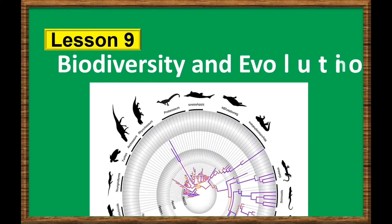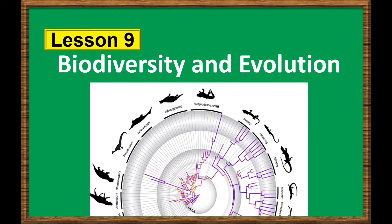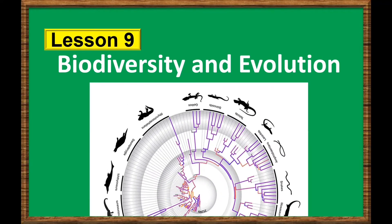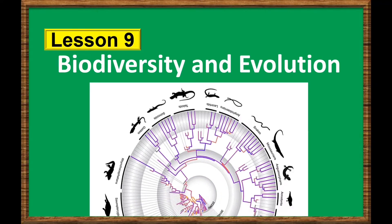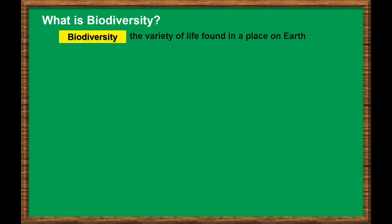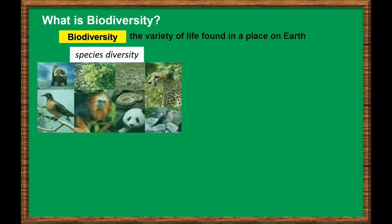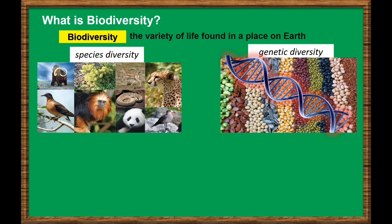Lesson 9: Biodiversity and Evolution. What is biodiversity? Biodiversity refers to the variety of life on Earth. It includes species diversity, genetic diversity within each species, and ecosystem diversity.